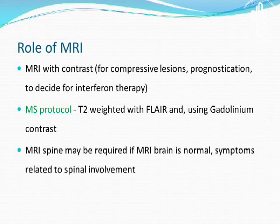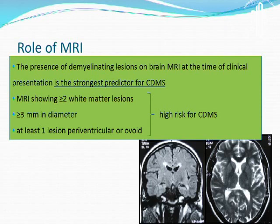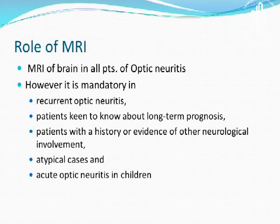The role of MRI needs to be emphasized — it is absolutely required in every case of optic neuritis at the outset. It helps in ruling out compressive lesions in retrobulbar neuritis, aids in prognostication, and deciding whether interferon therapy is required. T2-weighted FLAIR with gadolinium contrast should be performed. MRI spine is done if the MRI of the brain is normal. More than two white matter lesions measuring over 3mm is typical of MS. MRI is also mandatory in recurrent optic neuritis and in acute optic neuritis in children.